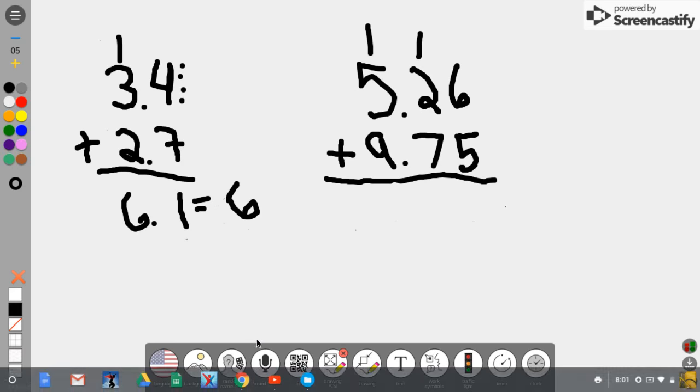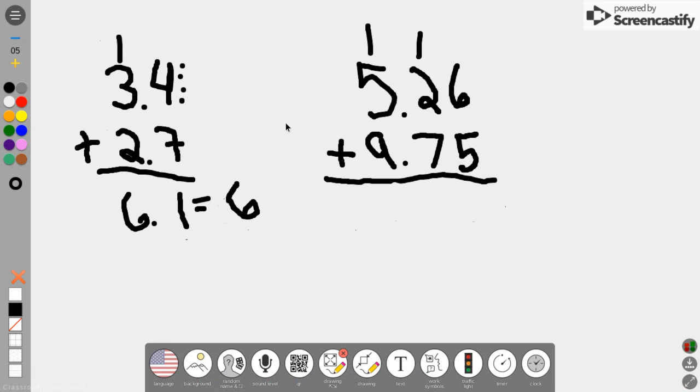Let's move on to number two. So I am going to add—oh I'm sorry. This is 5 and 26 hundredths plus 9 and 75 hundredths.